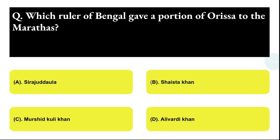Next question: which ruler of Bengal gave a portion of Orissa to the Marathas? Option A: Srirashtula, Option B: Sarfaraz Khan, Option C: Murshid Quli Khan, Option D: Alivardi Khan. The correct answer is option D, that is Alivardi Khan.